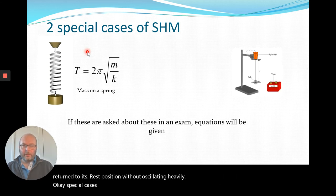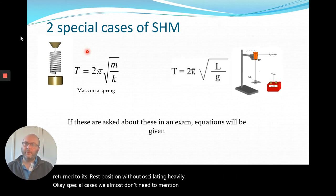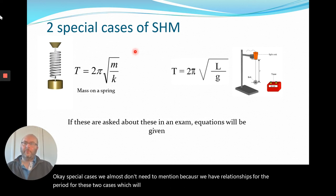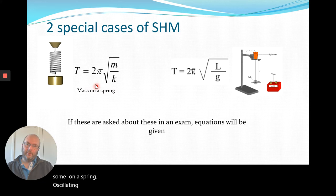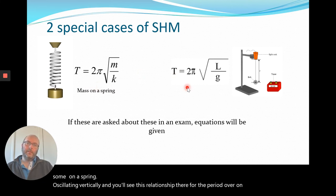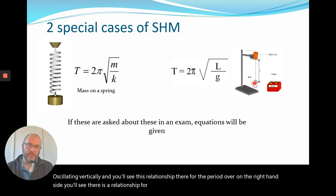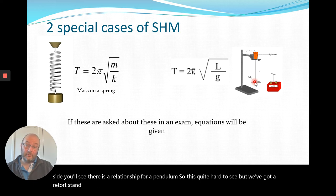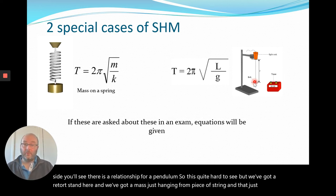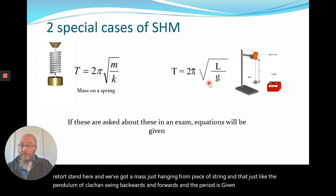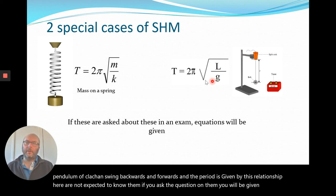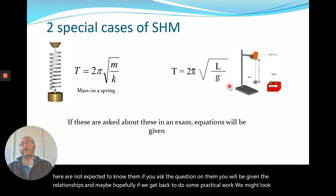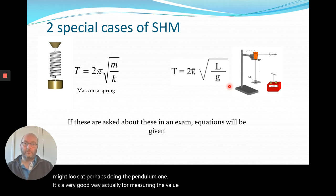For special cases, we have relationships for the period that you'll see often. On the left is a mass on a spring oscillating vertically, with a relationship for the period. On the right is a pendulum — a mass hanging from a piece of string that swings backwards and forwards — and its period is given by another relationship. You're not expected to know them from memory; if asked, you'll be given them. The pendulum is actually a very good way to measure the value of g, because we can graph the data.